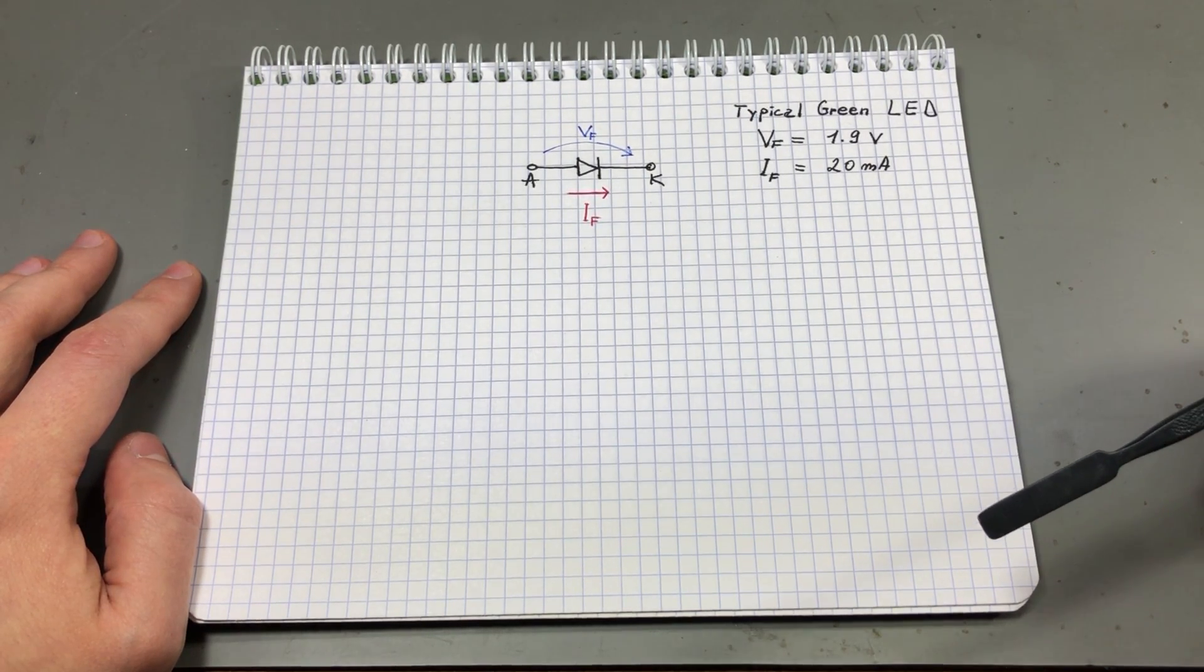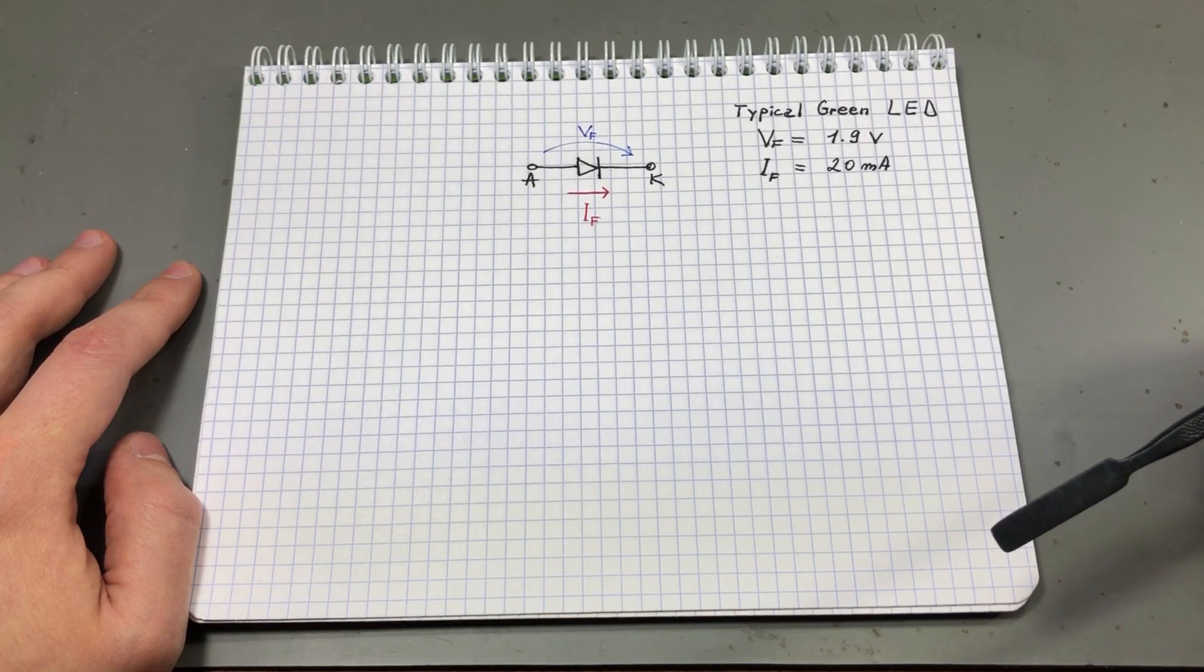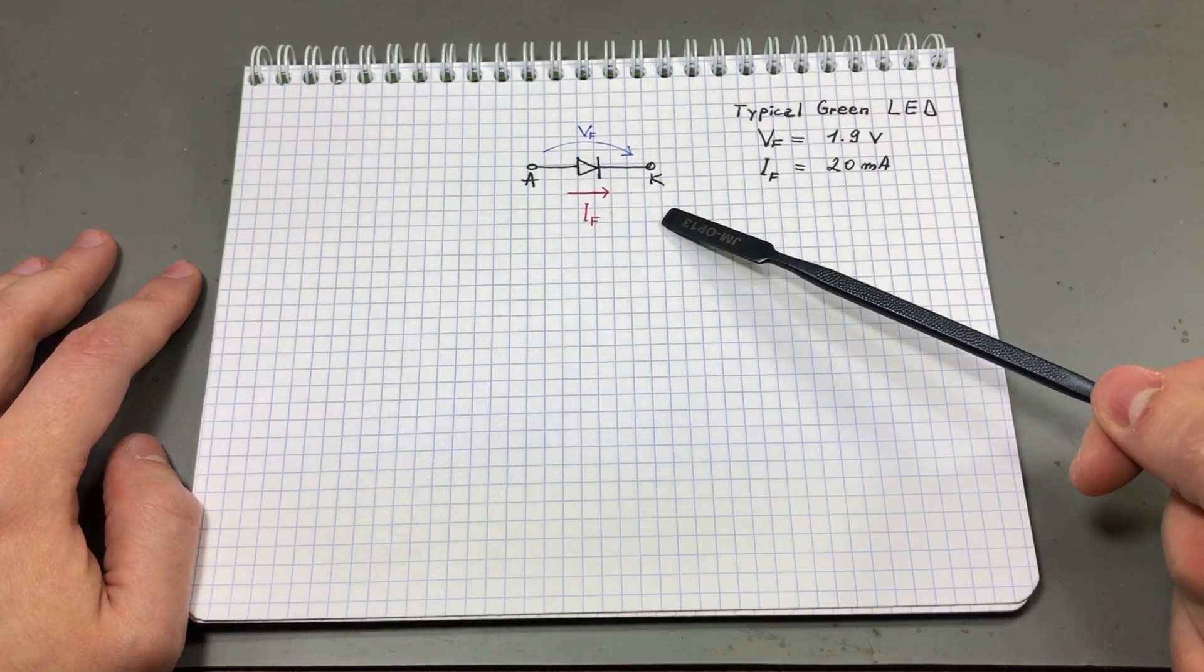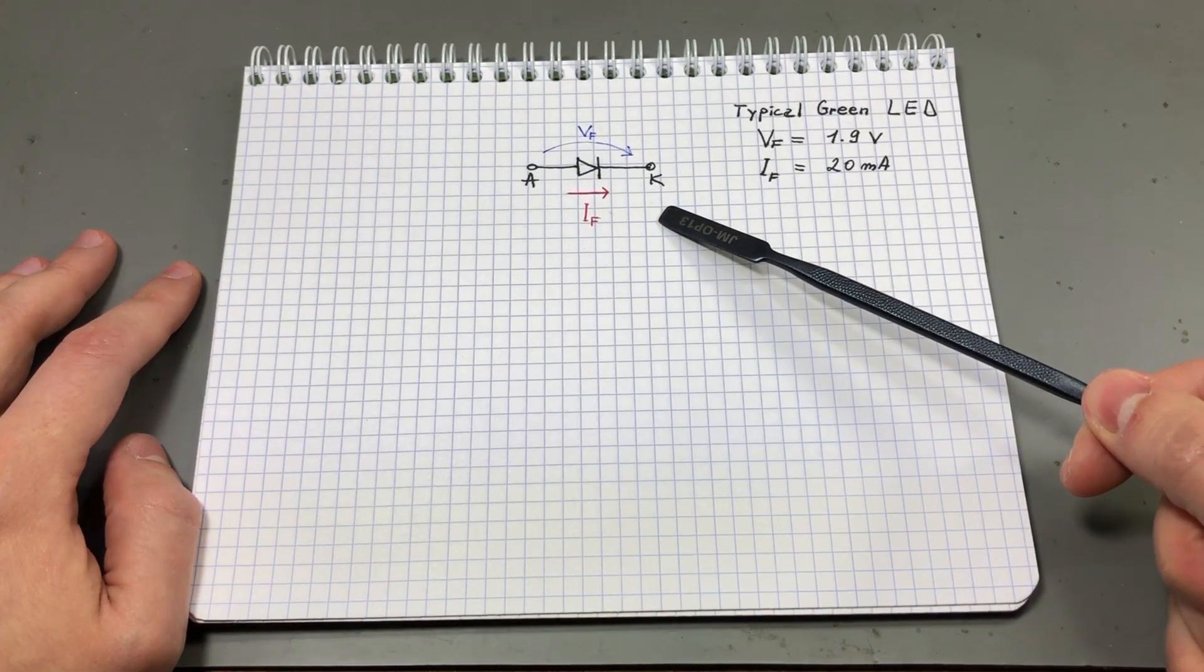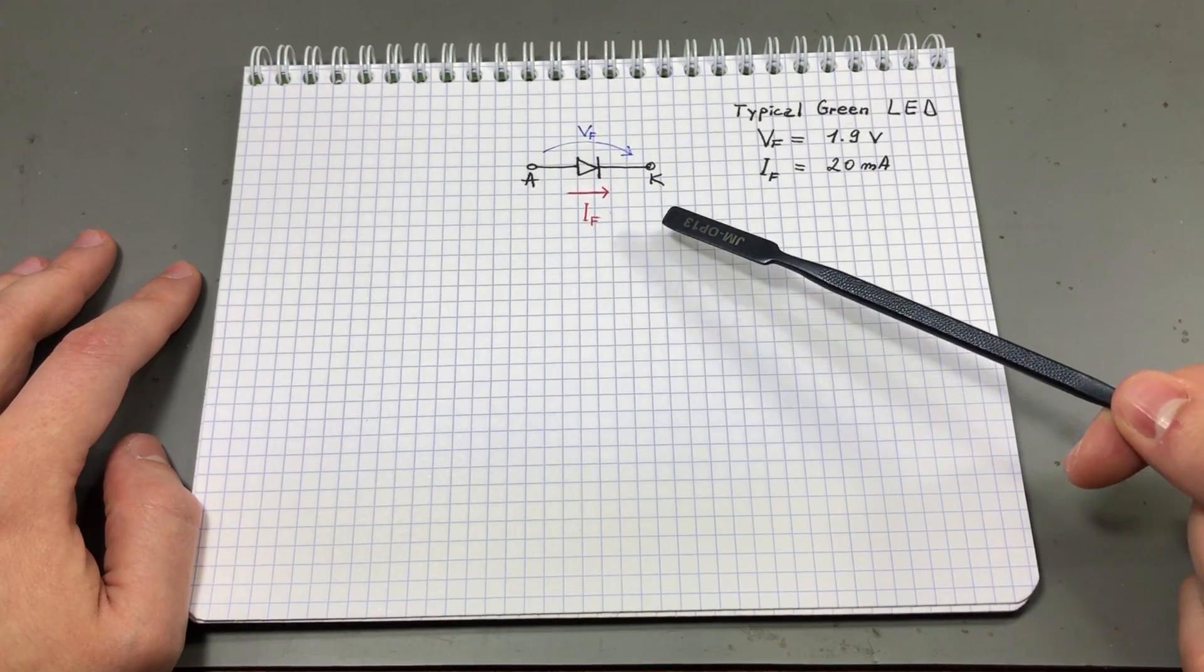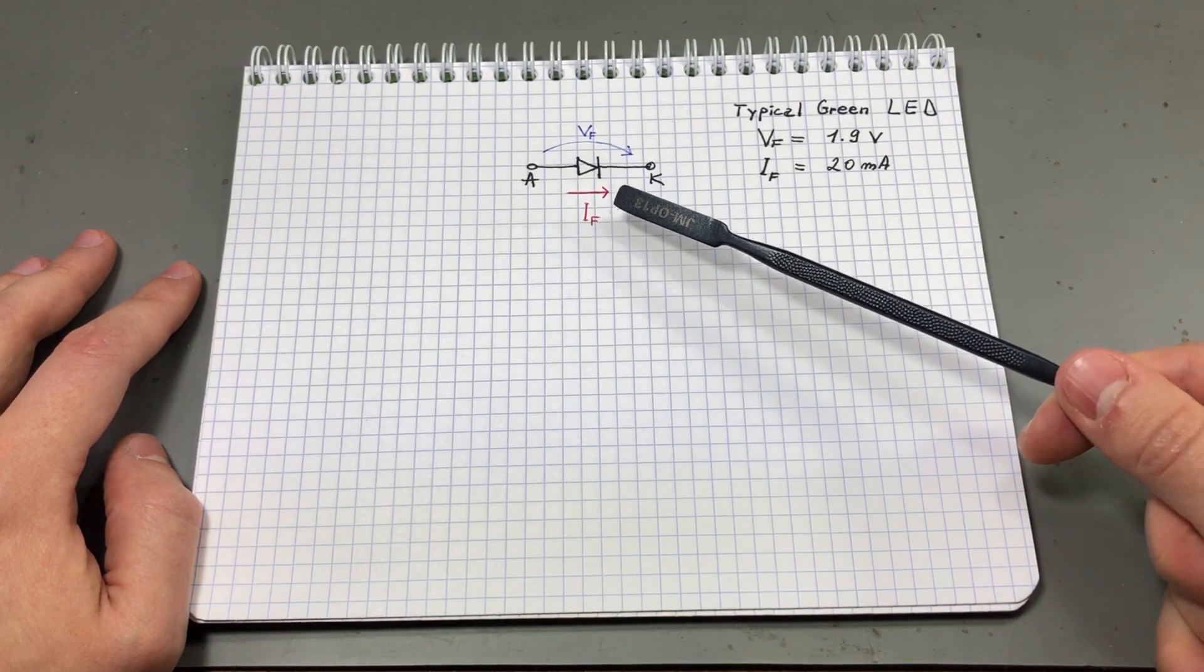The junction inside the LED will basically melt damaging the LED. So that's why we have a parameter called forward current. The manufacturer of the LED will characterize the part and they will mention this forward current at which it is safe to run the LED without destroying it.